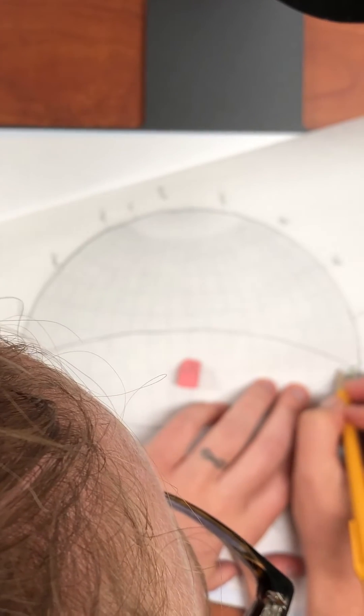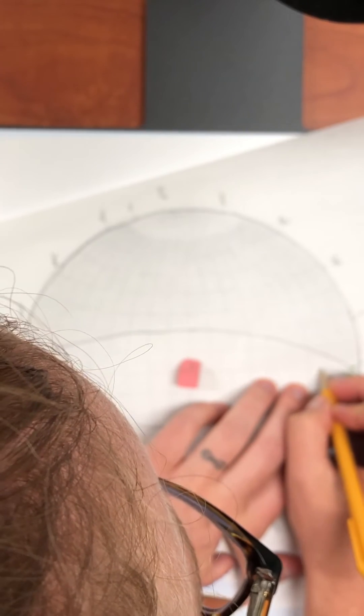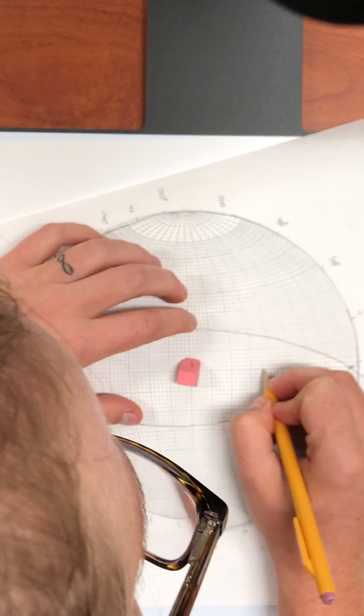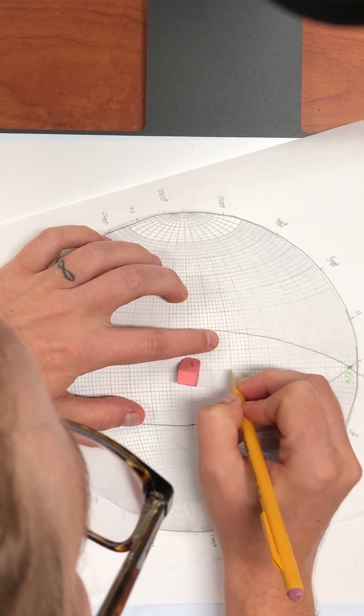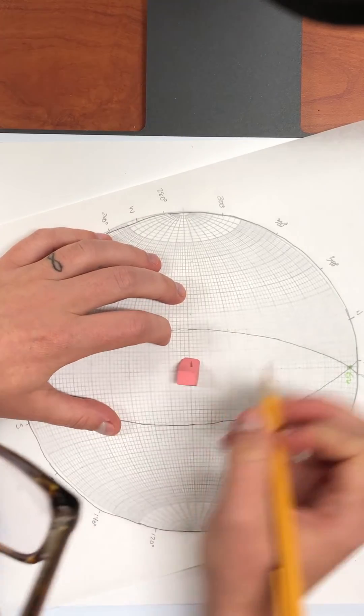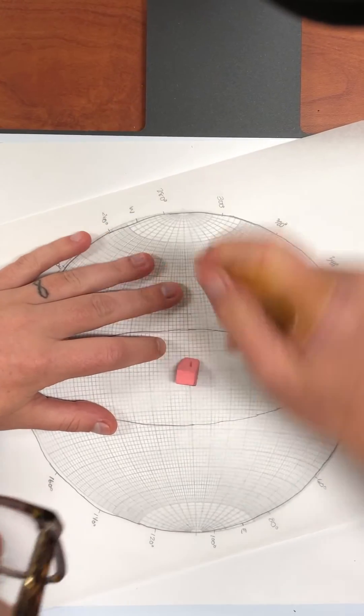So let's go 10, 20, 30, 40, 50, 60, 70, 80, 90. It's very close over here to my eraser.